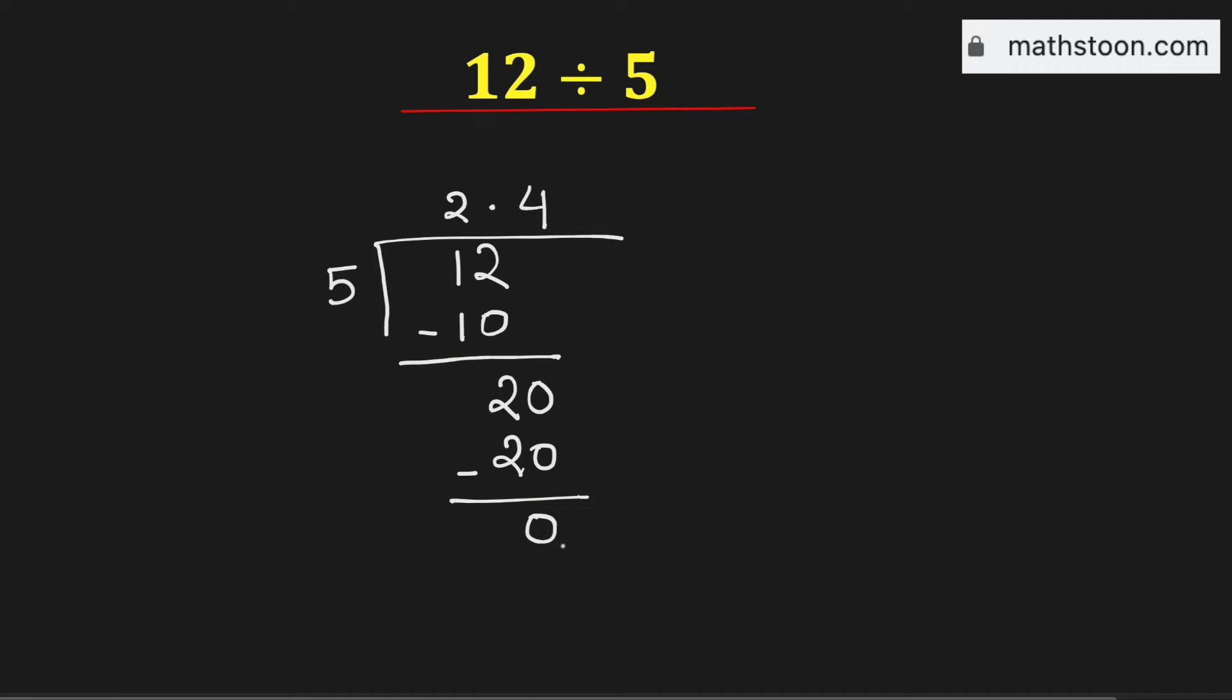So the moment we get 0 we need to stop, and this is equal to 12 divided by 5. So 12 divided by 5 is equal to 2.4, and this is our final answer. Thank you for watching.